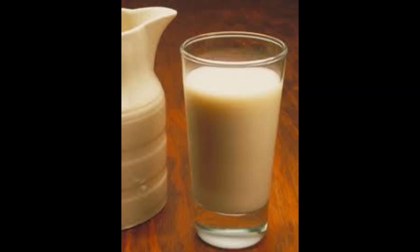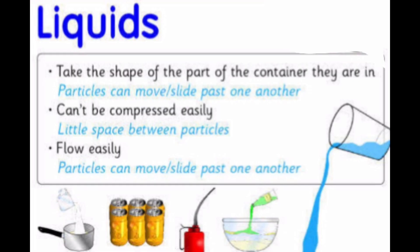Look at this picture. Here we can see that the shape of the liquid is determined by the shape of the glass. Liquids do not have a definite shape but they do occupy space. They have definite volume. They take the shape of the container in which they are filled. The water moves from one place to another because the matter in liquids are loosely packed.